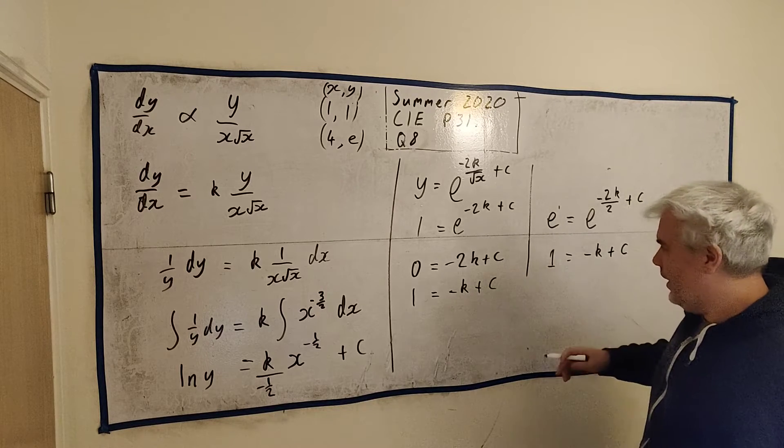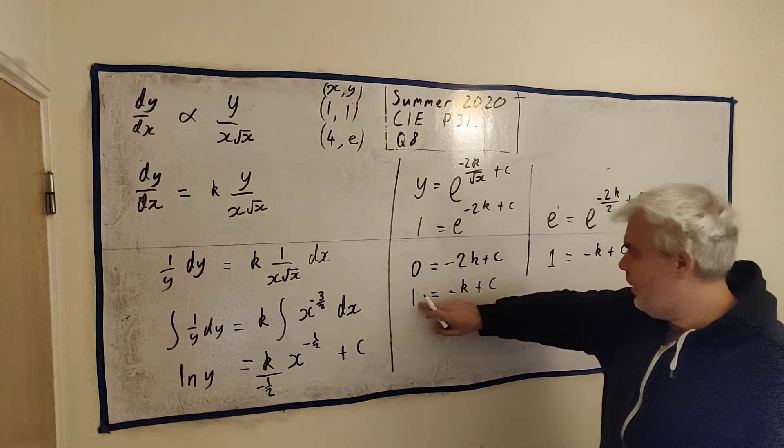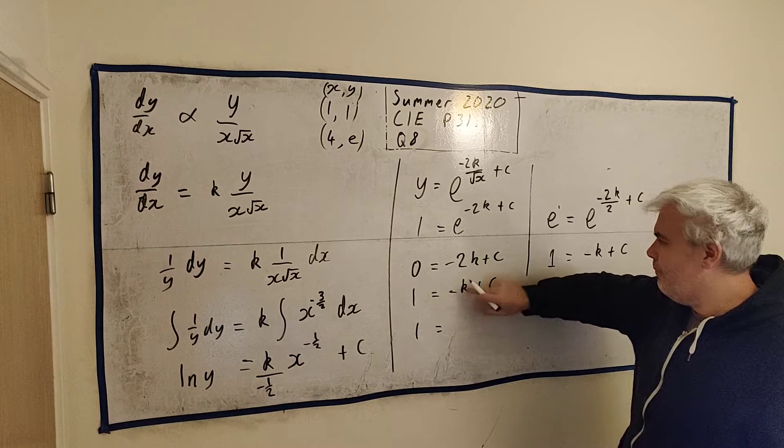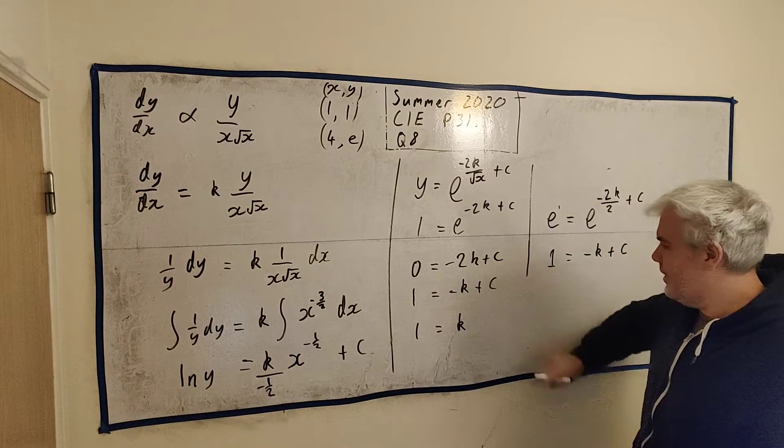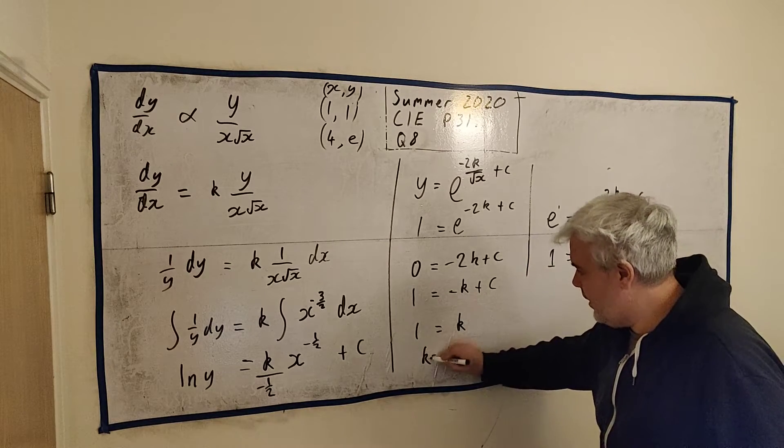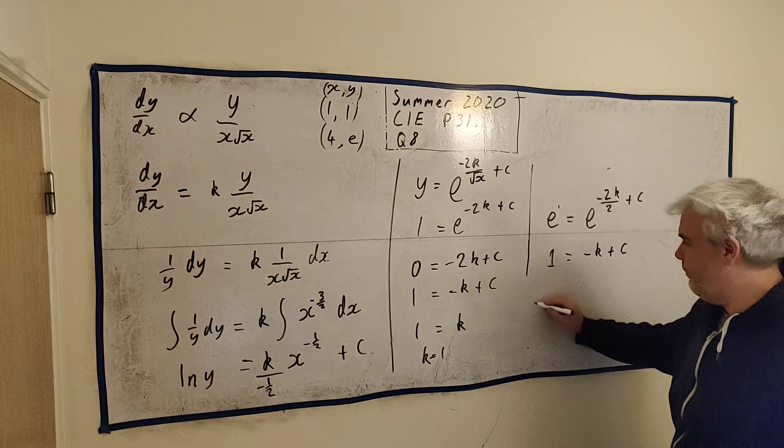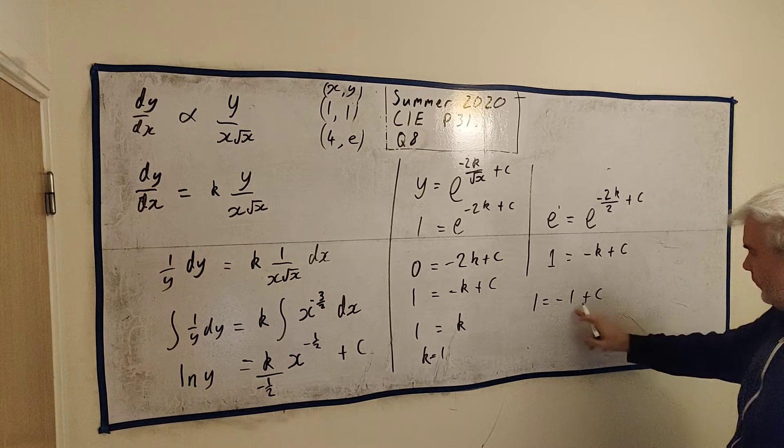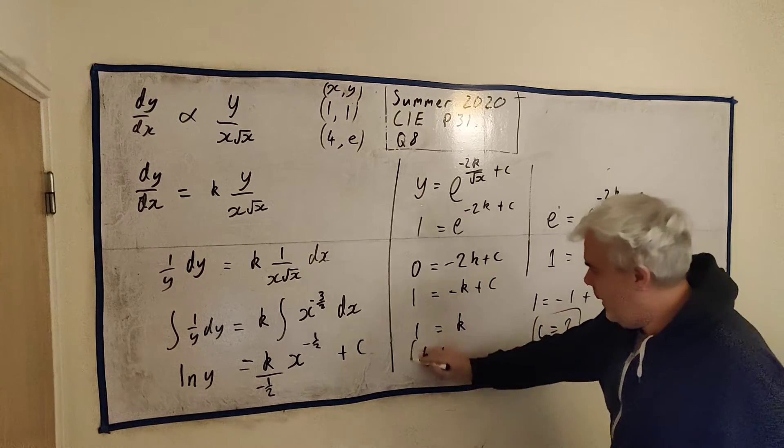We'll get the bottom row minus the top row. So, bottom row minus the top is 1 minus 0 is 1. Minus k minus minus 2k is plus k. And c minus c is 0. So, k equals 1. There we go. k equals 1. That's one of our numbers. Put that into either one you want. I'll put it into the second one here. And we get 1 is equal to minus 1 plus c. Move the 1 over. We'll get c is equal to 2.